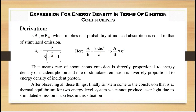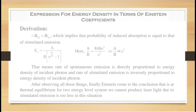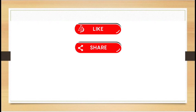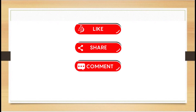In this video we have learned about the interaction of electromagnetic radiation with matter and derived the expression for energy density in terms of Einstein coefficients for a two-energy-level system under thermal equilibrium. If you liked this video, press the like button, share it with your friends, and subscribe to our channel for more videos. Thank you for watching.